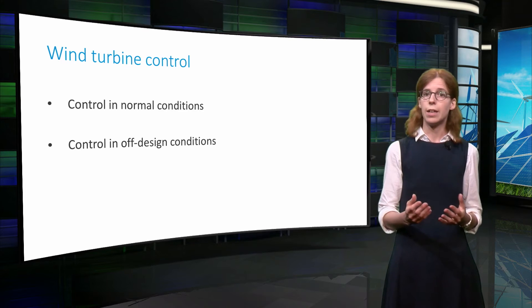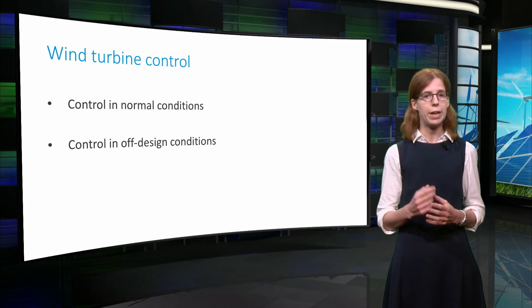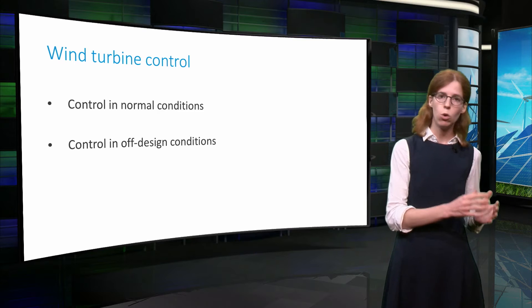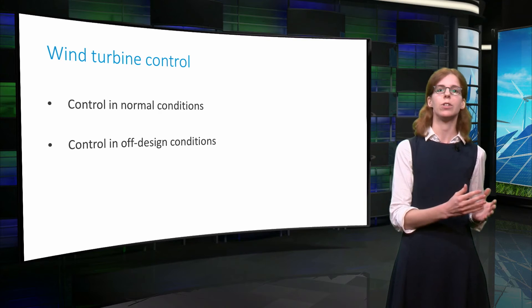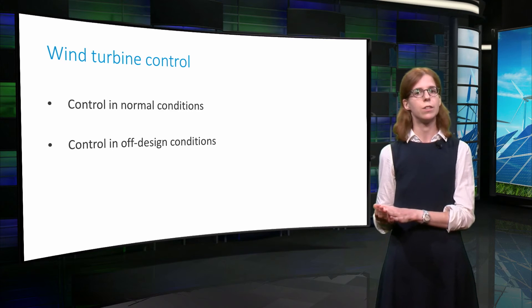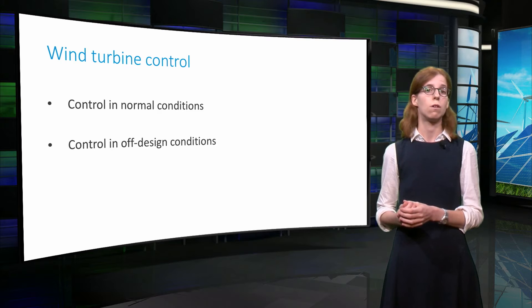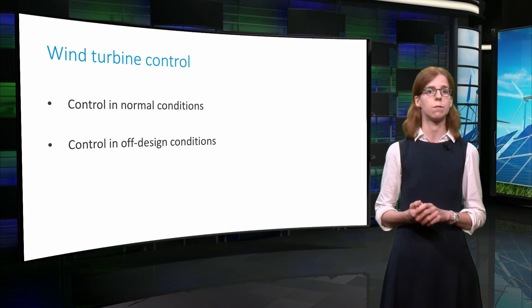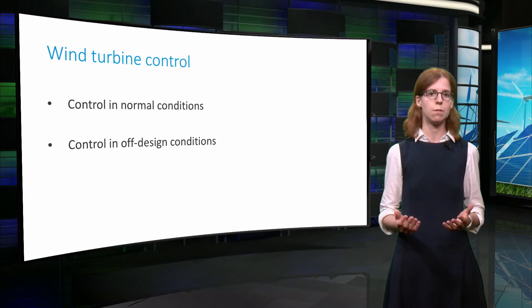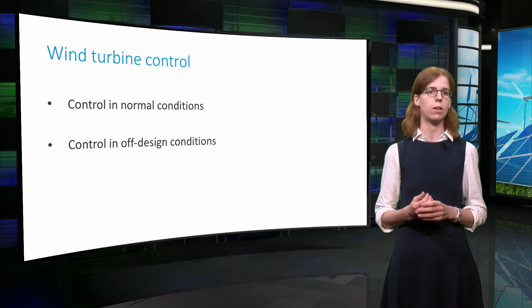In this context, wind turbine control has two main purposes. In normal conditions, it makes sure that the power does not exceed the rated power. And in off-design conditions, it brings the system to a safe state, for example during extreme wind gusts. Of course, safety systems should always be able to overrule the nominal controller.